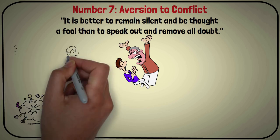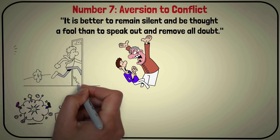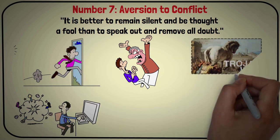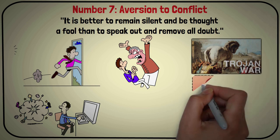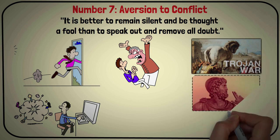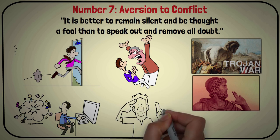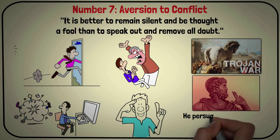They are unlikely to be found in heated debates or arguments and prefer to keep to themselves. In the story of the Trojan War, the character of Odysseus is a prime example of Sigma males' aversion to conflict. Despite his strength and intelligence, Odysseus was known for his subtlety and cunning. He persuaded the Trojans to accept the wooden horse, preventing a conflict.